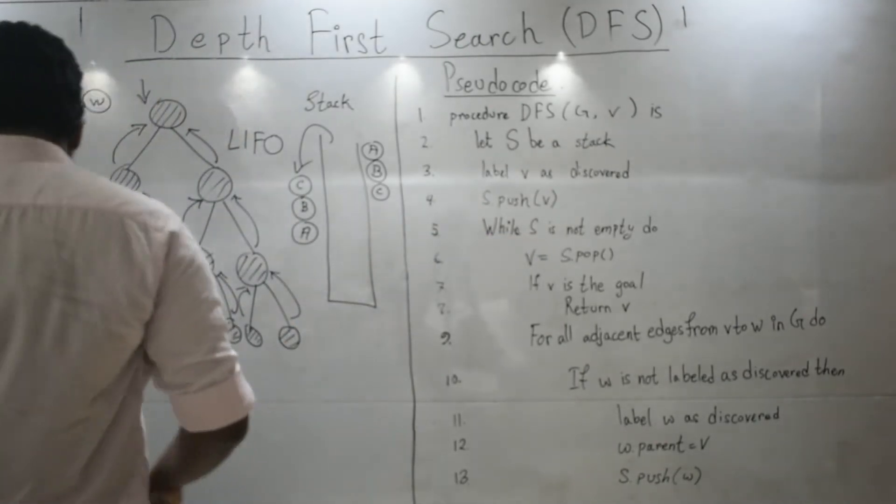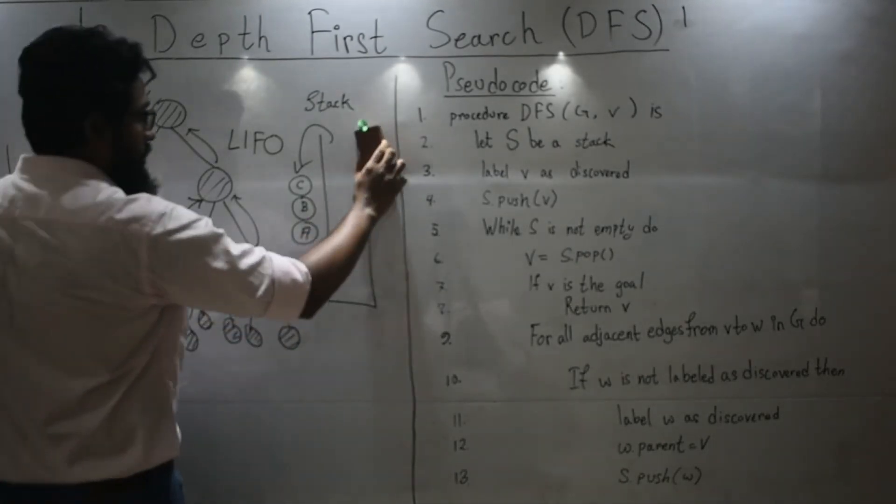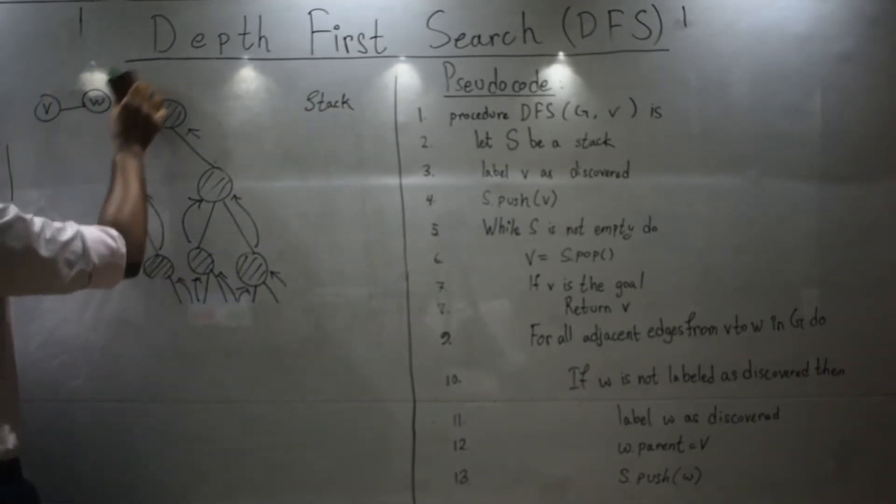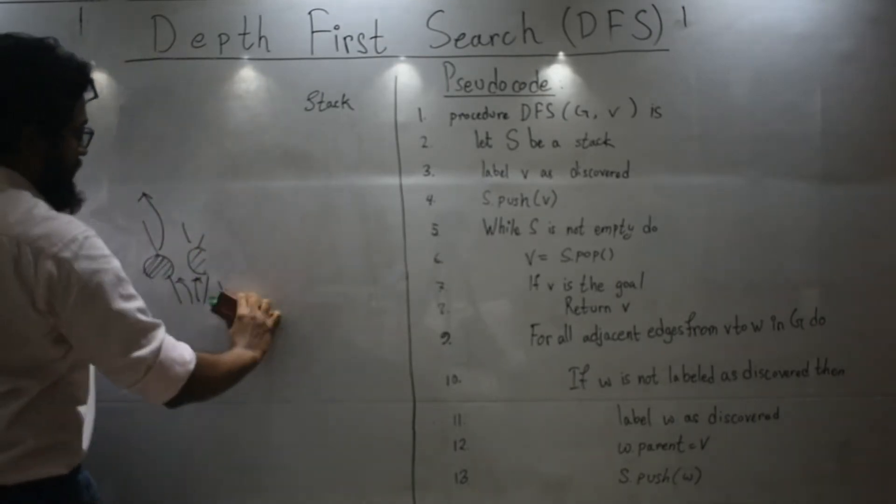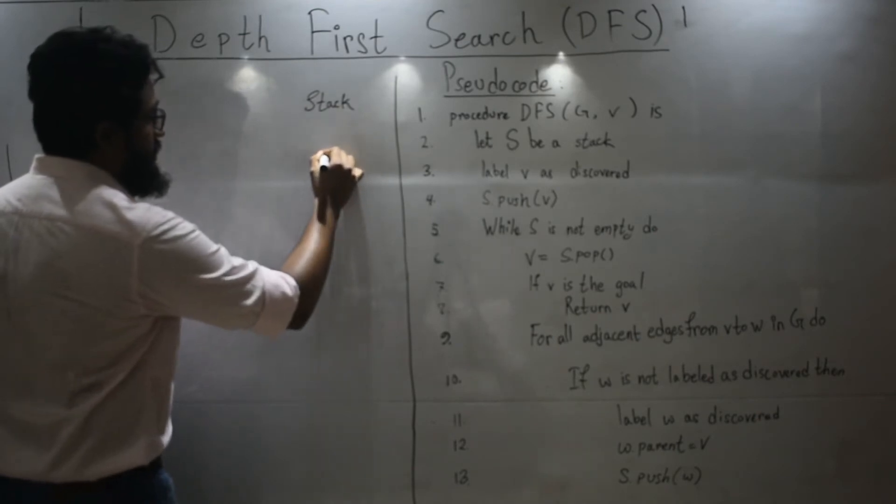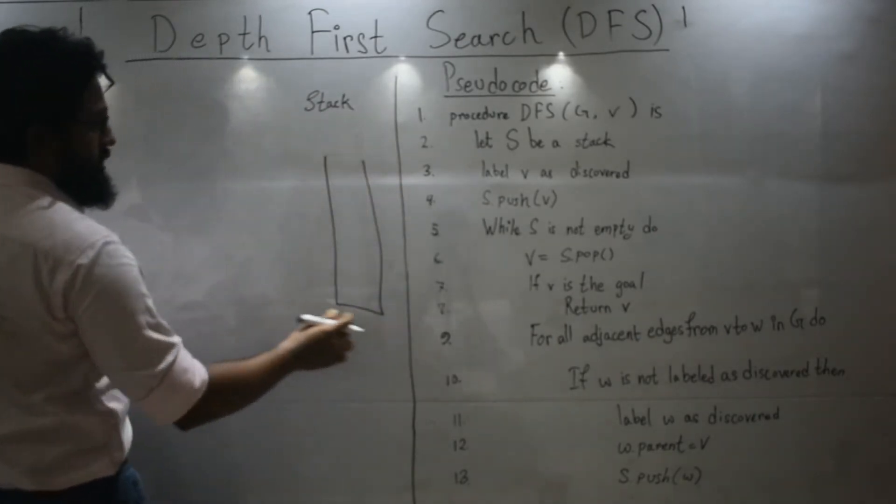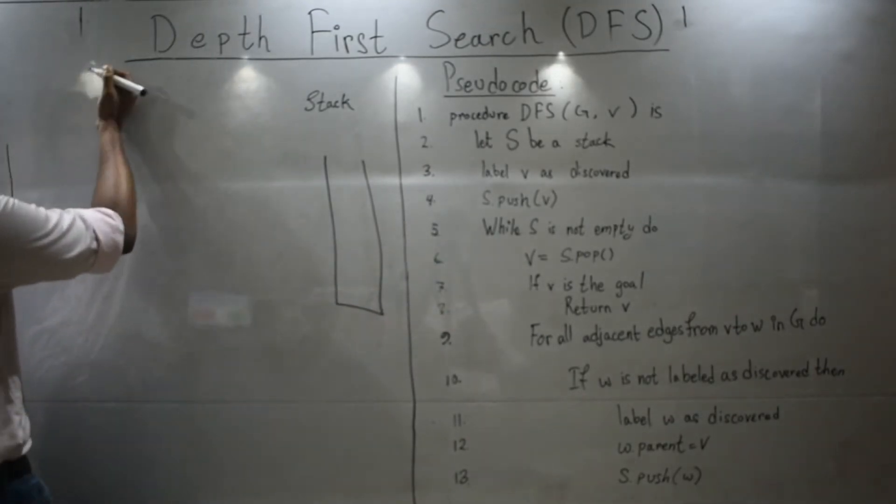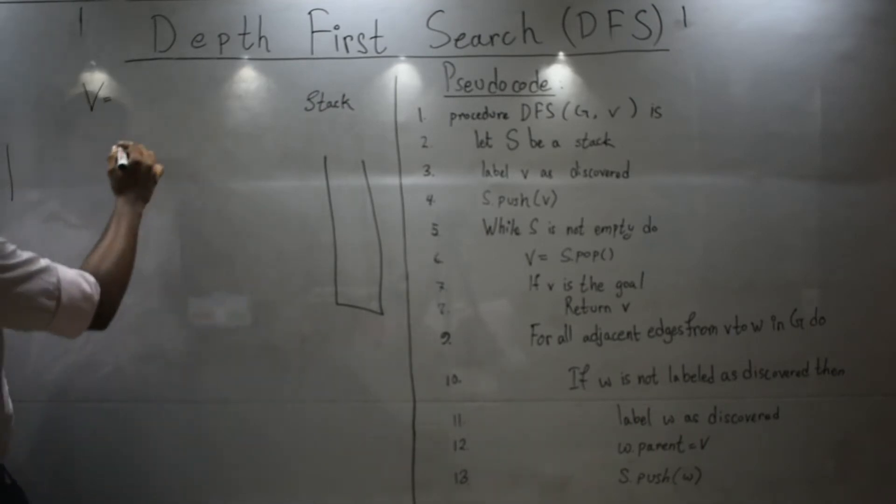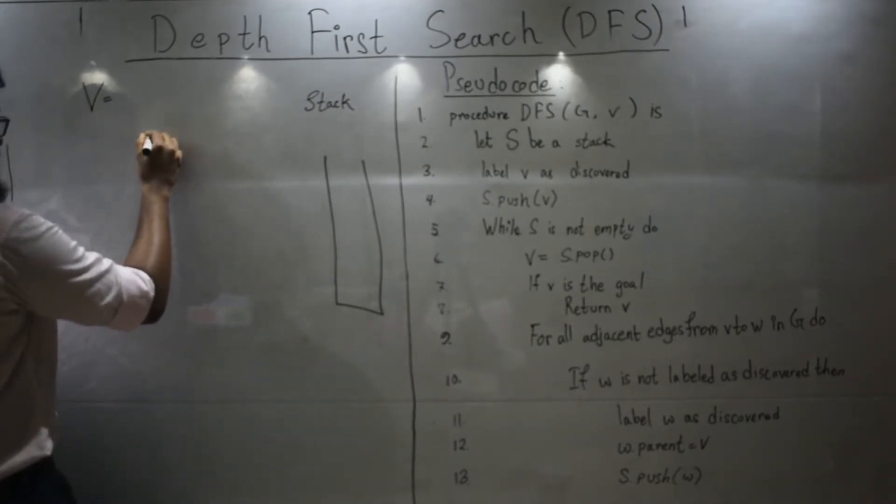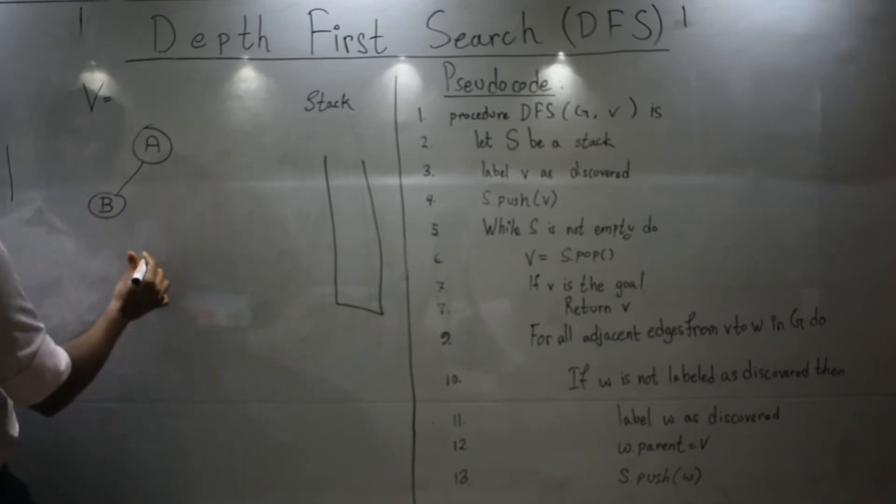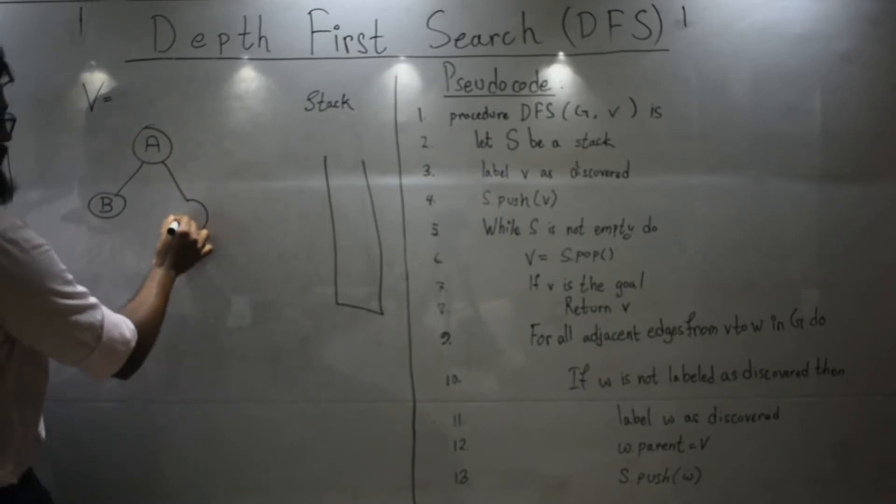So at first let's draw my stack. And let's draw a variable. Or just allot it. V. Okay. Now let me show you the tree, the graph that I'm gonna use for this example. Say, this is your root node. B. And then, next one. Let's call it S.